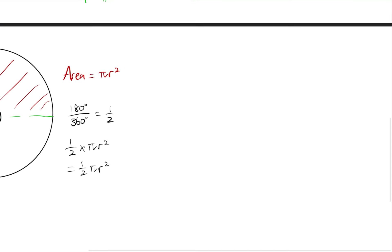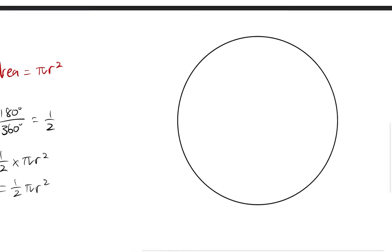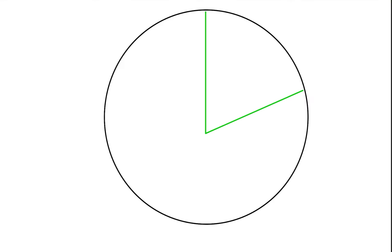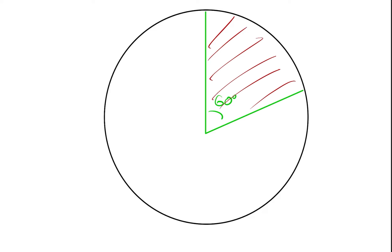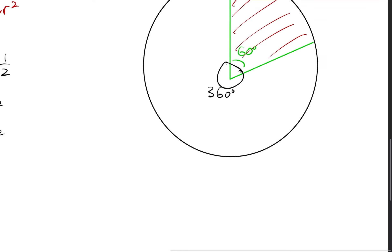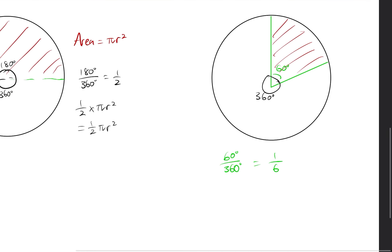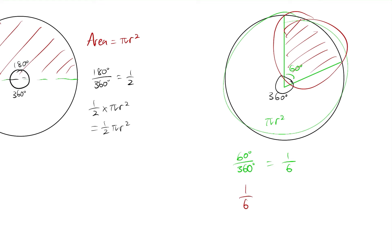Let's do one last example before ending today's video. I have a circle with a 60-degree sector, and I want to find that area. We apply the ratio again: 60 degrees over 360 degrees gives us 1 over 6. The full circle area is πr², so we're finding 1 over 6 of the whole area, which gives us one sixth πr².